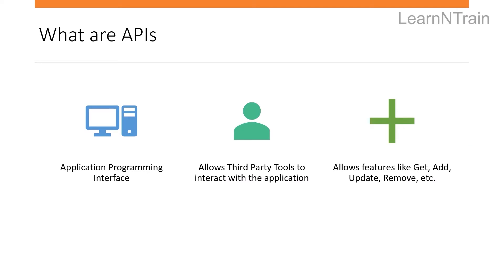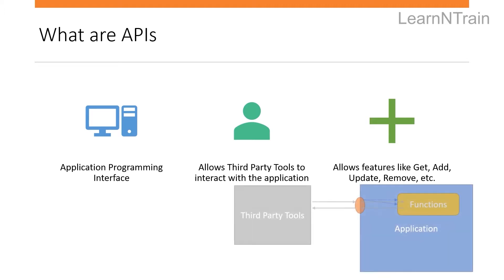So what are APIs? APIs are Application Programming Interfaces. They allow third-party tools to interact with the application. They generally allow features like get or fetch data from an application, add, update or remove different configurations of the application.